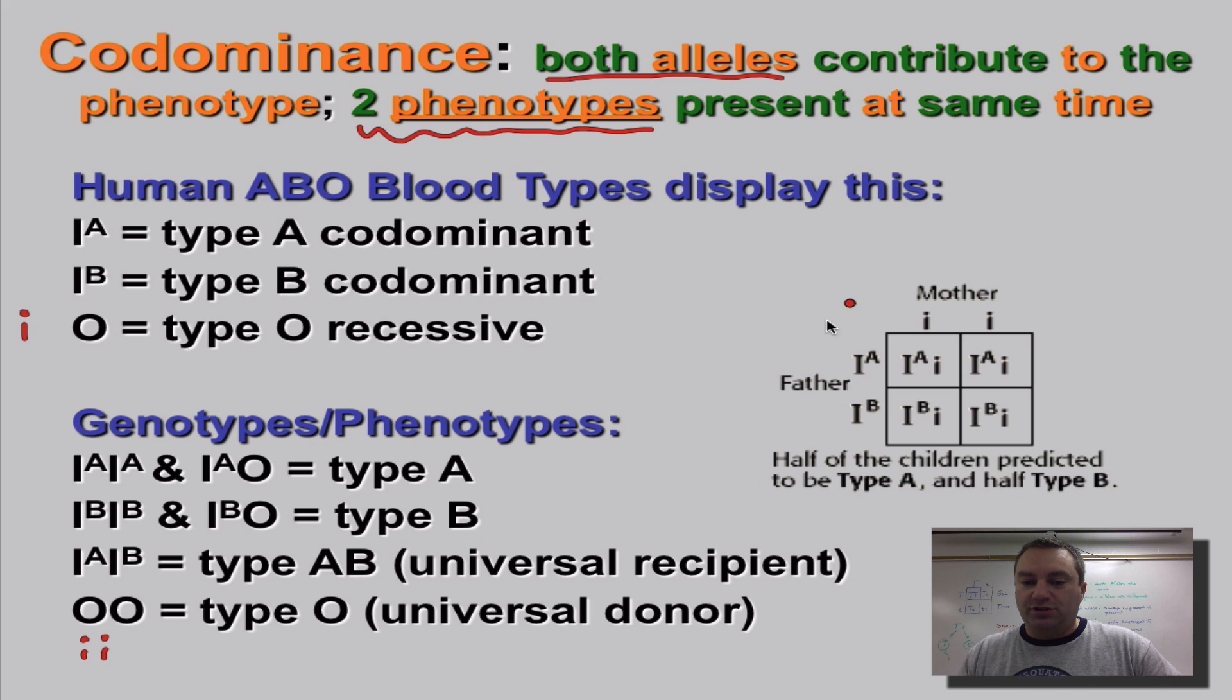Now, over here we've got a Punnett square that shows a case where an individual who has type AB is going to mate with a person who is type O. And inside here is a possibility of all their children. Now, their children can either have type A or type B blood. So in this case, the genotype ratio would be one to one because it can be AO or BO. And the phenotype ratio would also be one to one because they can either be type A or type B.